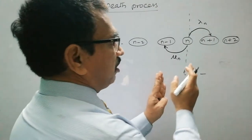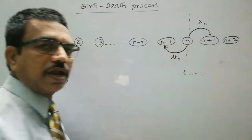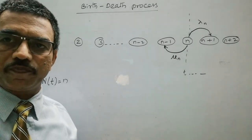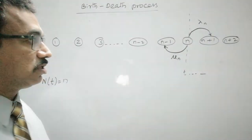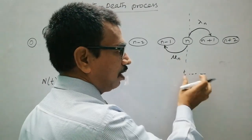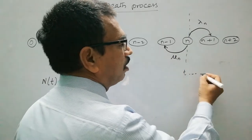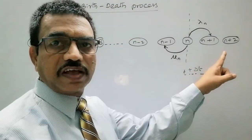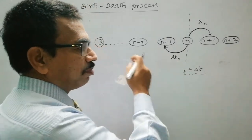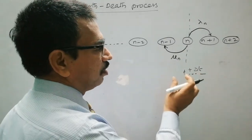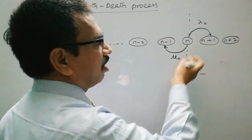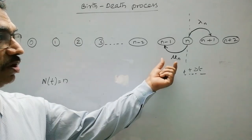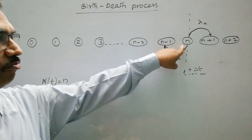The time within which the state changes from n to n+1 or n to n-1 depends on whether a birth or a death takes place first. At time t, the next customer may arrive at some time delta_t, so after t+delta_t a customer may arrive, or otherwise a customer may leave within this time. The remaining time is a random variable and whichever is shorter takes place first. If service completion takes place first, the system moves from state n to n-1.